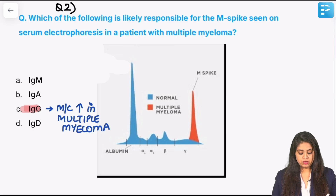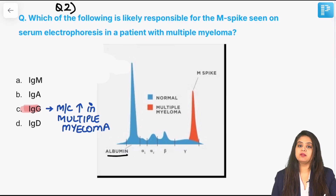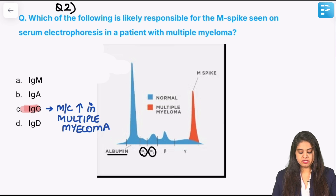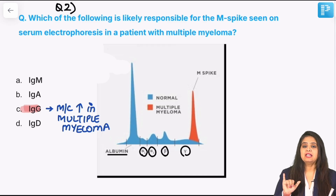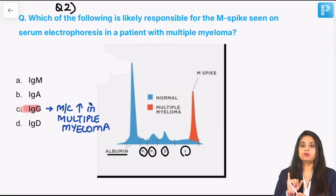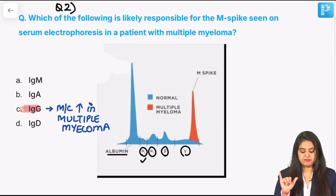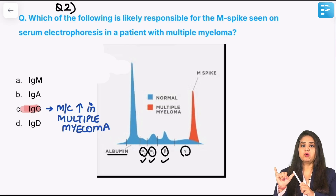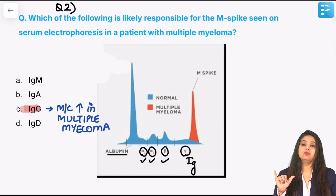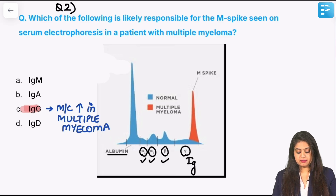Looking at the overall normal serum protein electrophoresis tracing: the maximum protein in the blood is albumin. After that we have alpha-1, alpha-2, beta, and gamma proteins. We learn this with the finger diagram — albumin is the tallest peak, the three middle fingers represent alpha-1, alpha-2, and beta, and the thumb making a small hill represents gamma, responsible for immunoglobulins. In the patient, the gamma spike has occurred — that is the M spike.